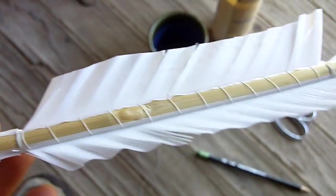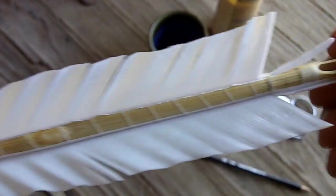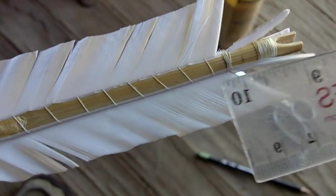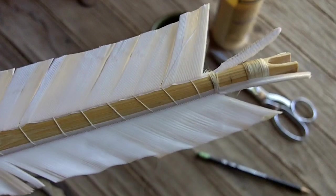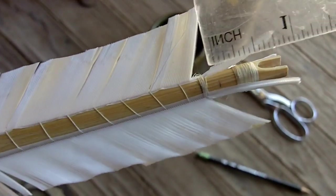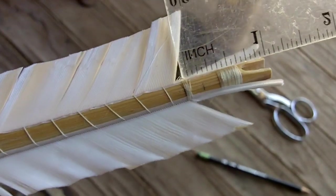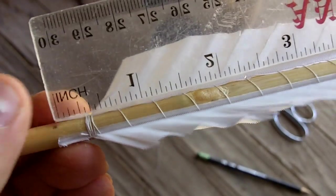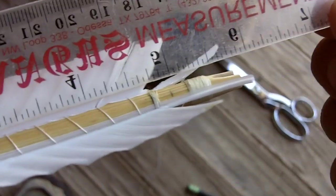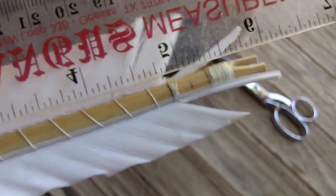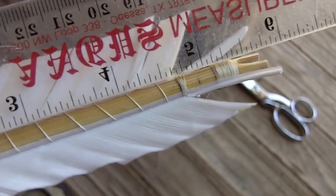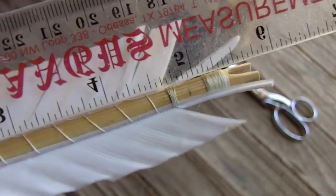But what I did first is I laid out some marks. I usually end the fletch on this type of arrow about an inch away from the back. And the front part, very front of the fletchings, is six inches, roughly six inches from the back of the arrow. In this case, it's about five and three-quarter.